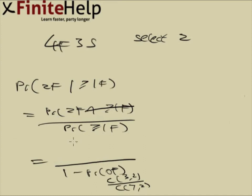To have two freshmen, we have four freshmen to choose from and we choose two, over the combination 7 choose 2. Seven choose 2 is 21, and I'm going to make this 21 over 21. First, I'm actually going to cancel out the twenty-ones.